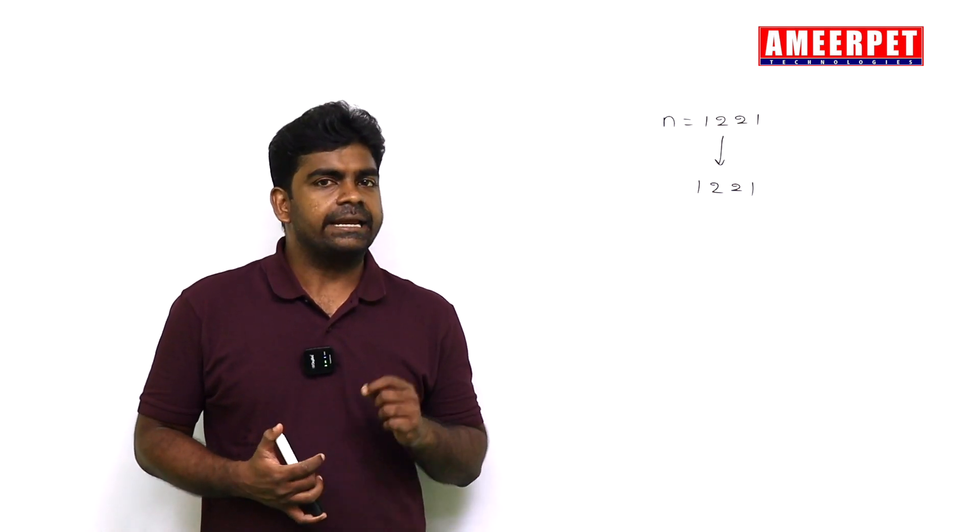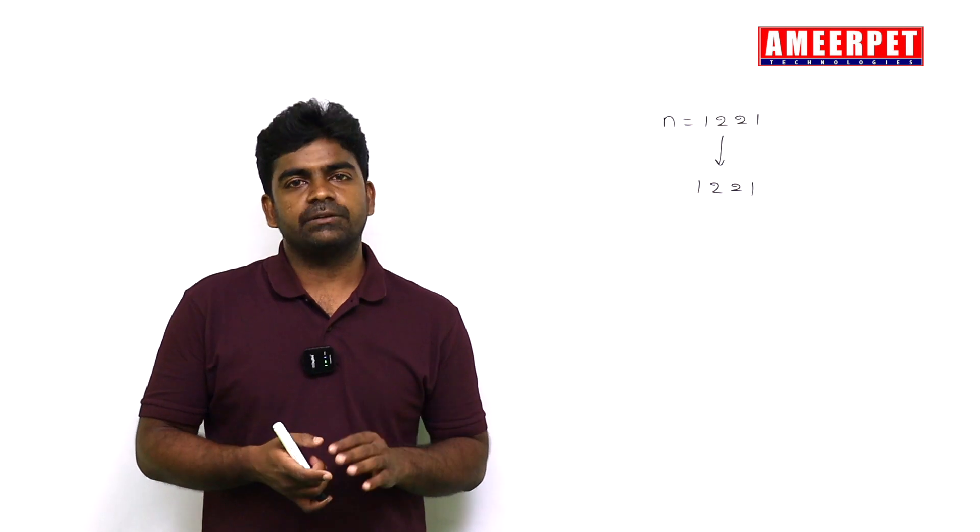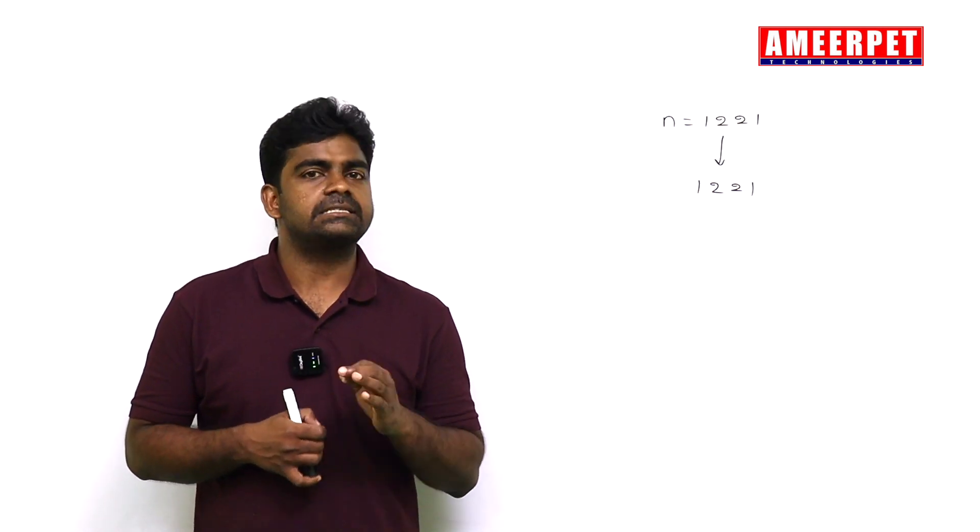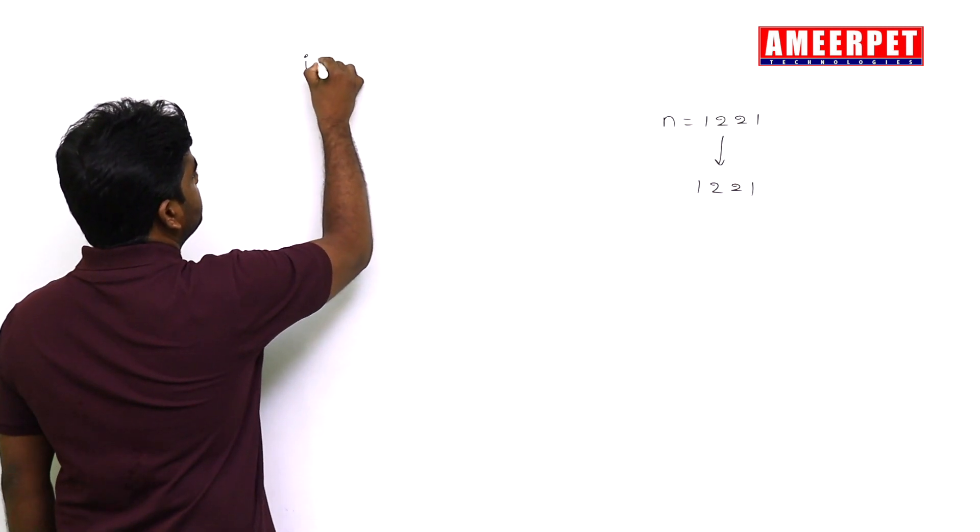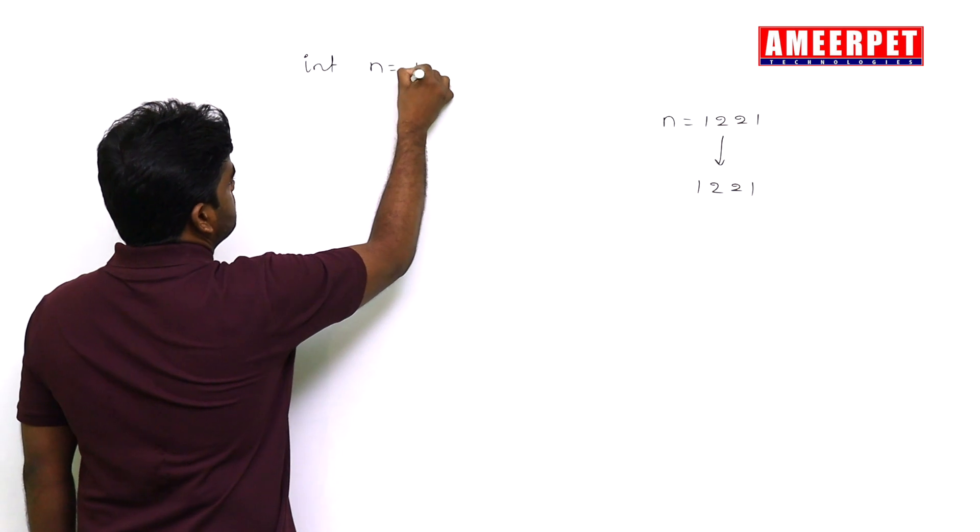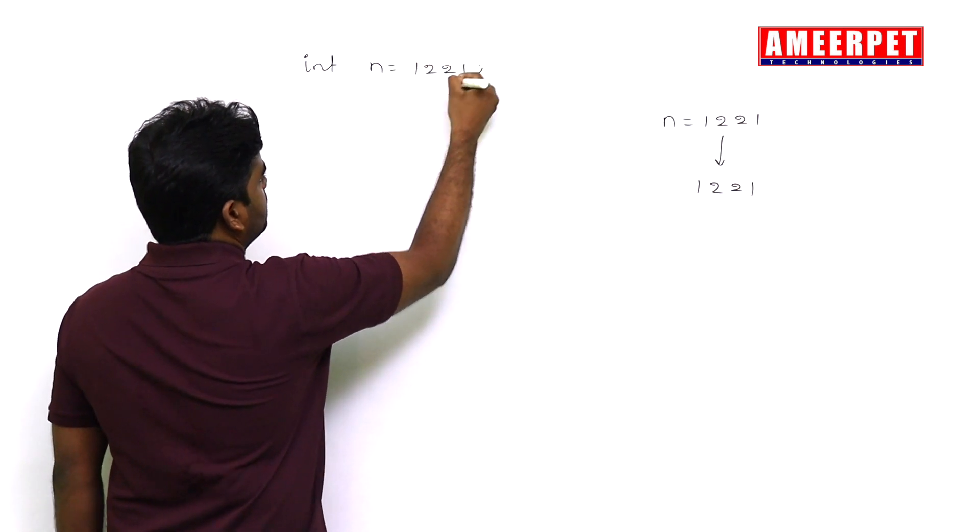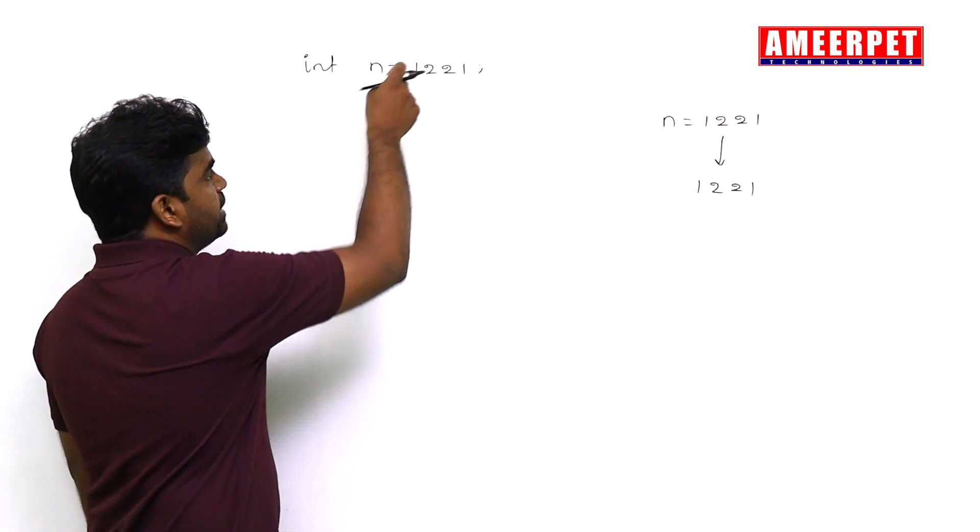First we need to find out the reverse number for the given number. In the last video, I clearly explained how to reverse the given number. Now we are following the same logic here. I am taking the number integer n equals to 1221. Of course, you can change the number - if it is a palindrome you will get palindrome, if not you will not get palindrome.